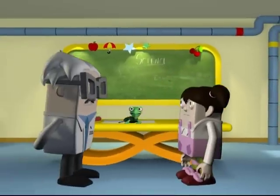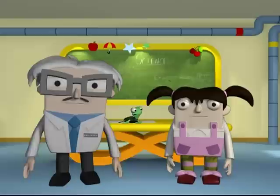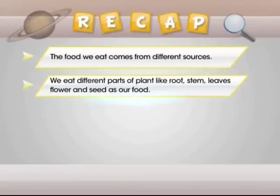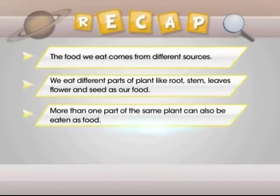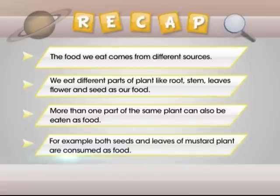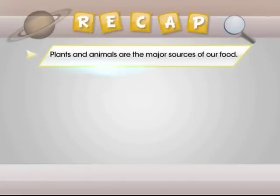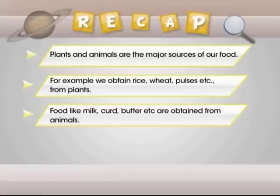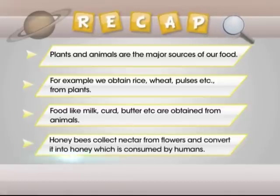All this food talk has made me hungry. Come, let's take a quick recap of what we have learnt so far. The food we eat comes from different sources. We eat different parts of plants like root, stem, leaves, flower, and seed as our food. More than one part of the same plant can also be eaten as food — for example, both seeds and leaves of the mustard plant are consumed. Plants and animals are the major sources of our food. We obtain rice, wheat, pulses, etc. from plants. Food like milk, curd, butter, etc. are obtained from animals. Honey bees collect nectar from flowers and convert it into honey, which is consumed by humans.